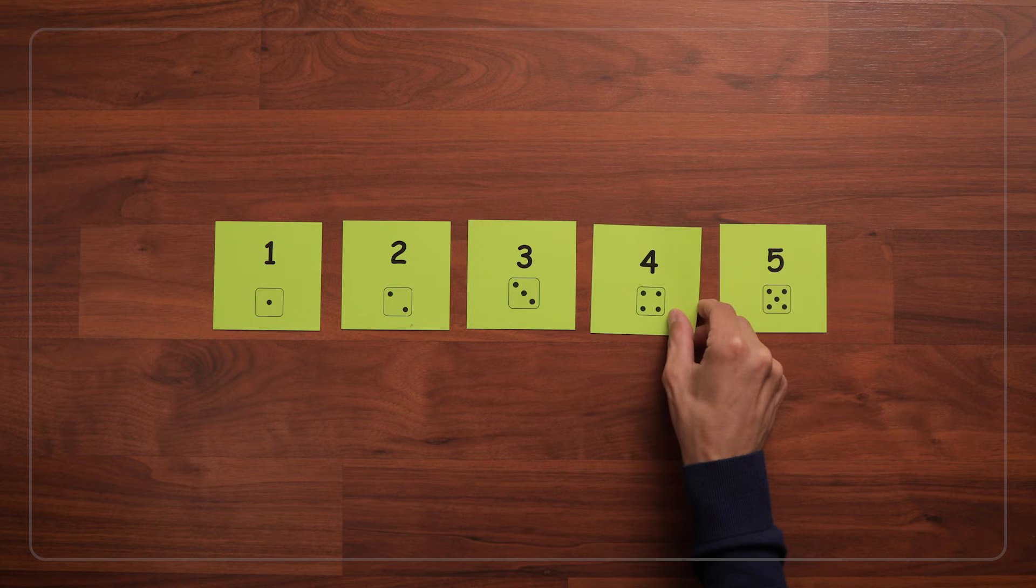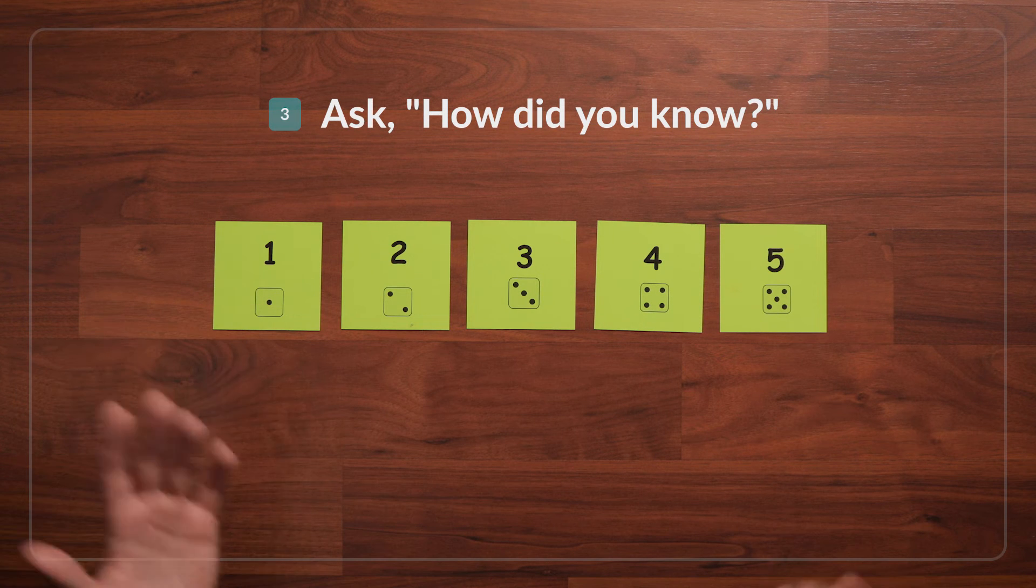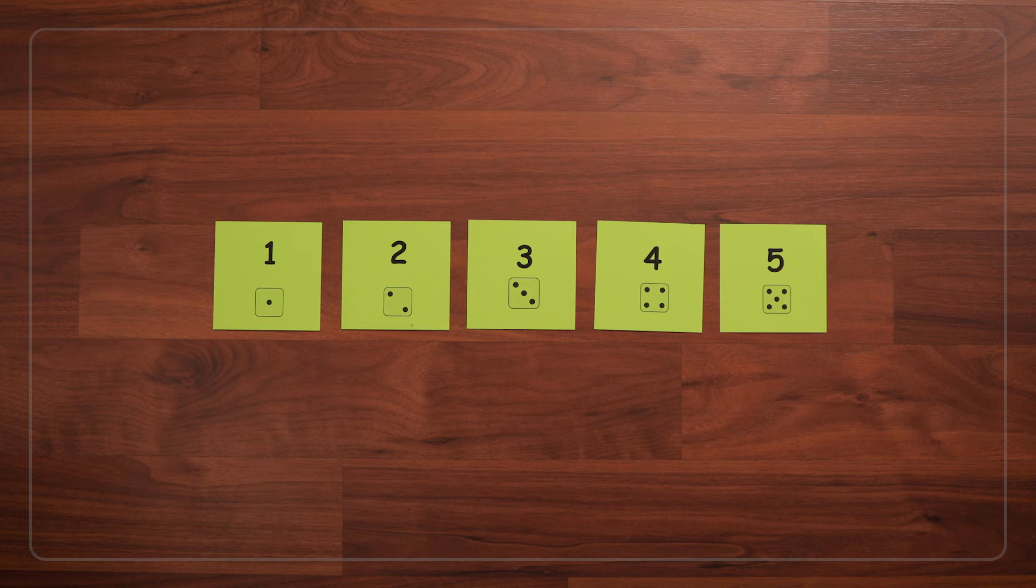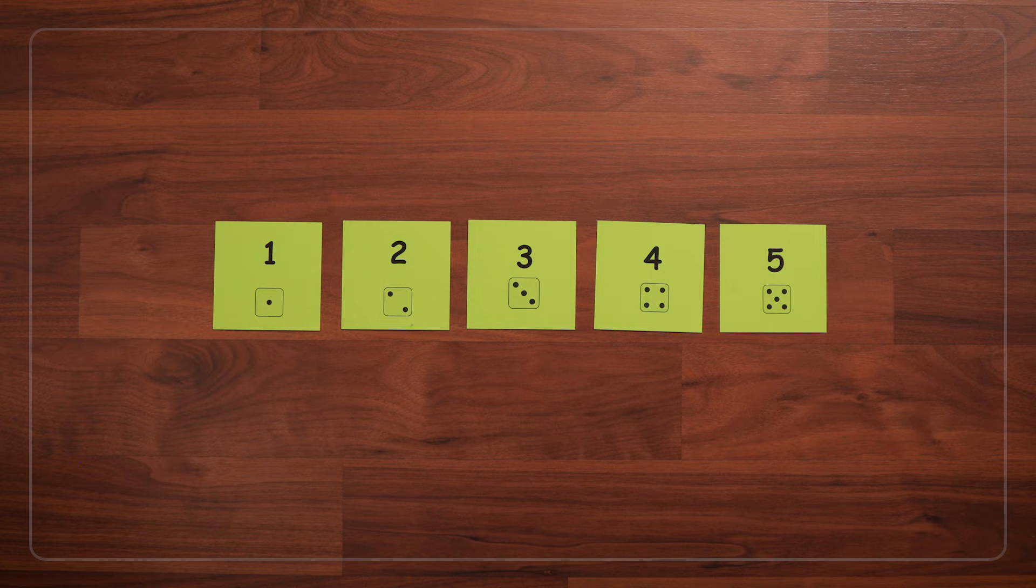Once they identify the missing card, I'll say, yeah, it is four. How did you know it was four? And I'm trying to figure out if they count it up from one, or maybe they knew what number comes after three.